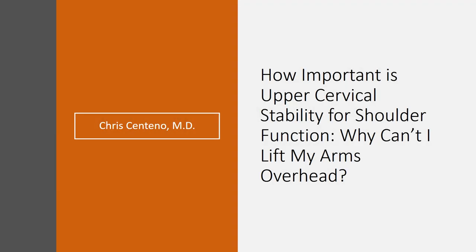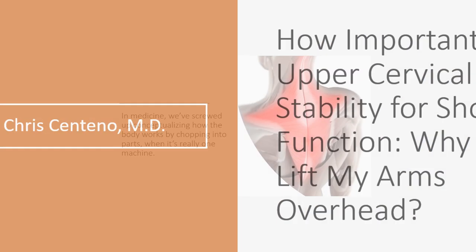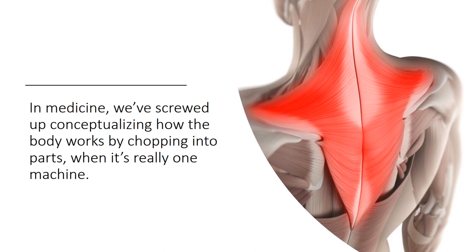How important is upper cervical stability for shoulder function, or why can't I lift my arms overhead? In medicine, we've really screwed things up. We've got a shoulder, a neck, and a thoracic spine, but it's all one big connected machine.